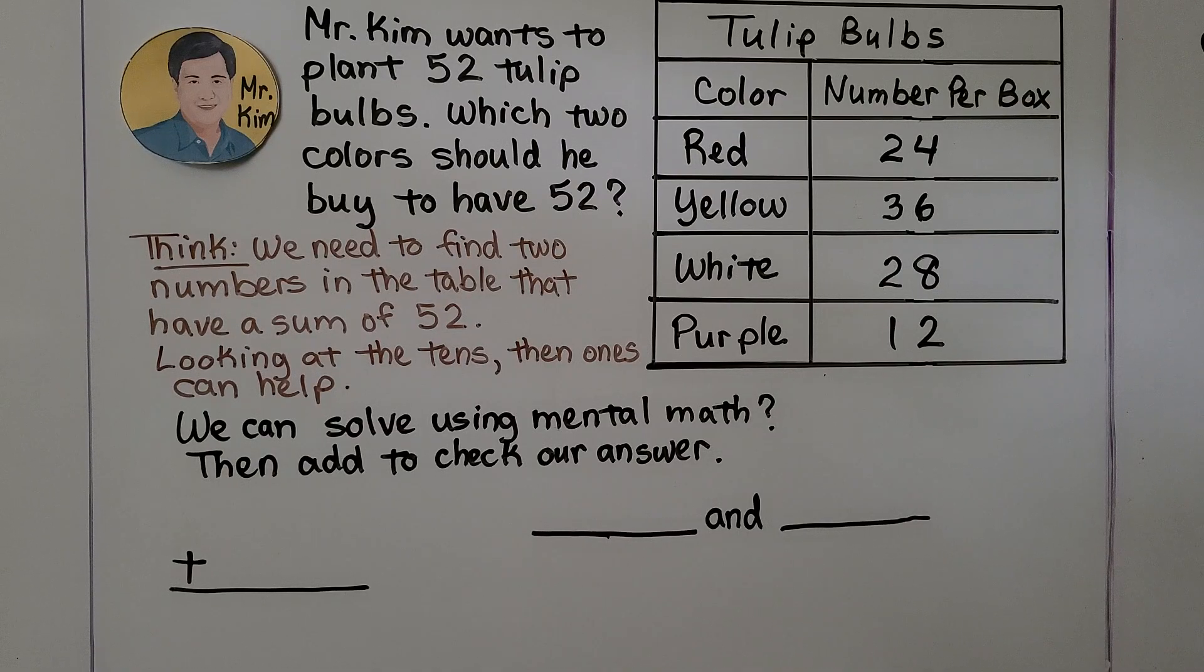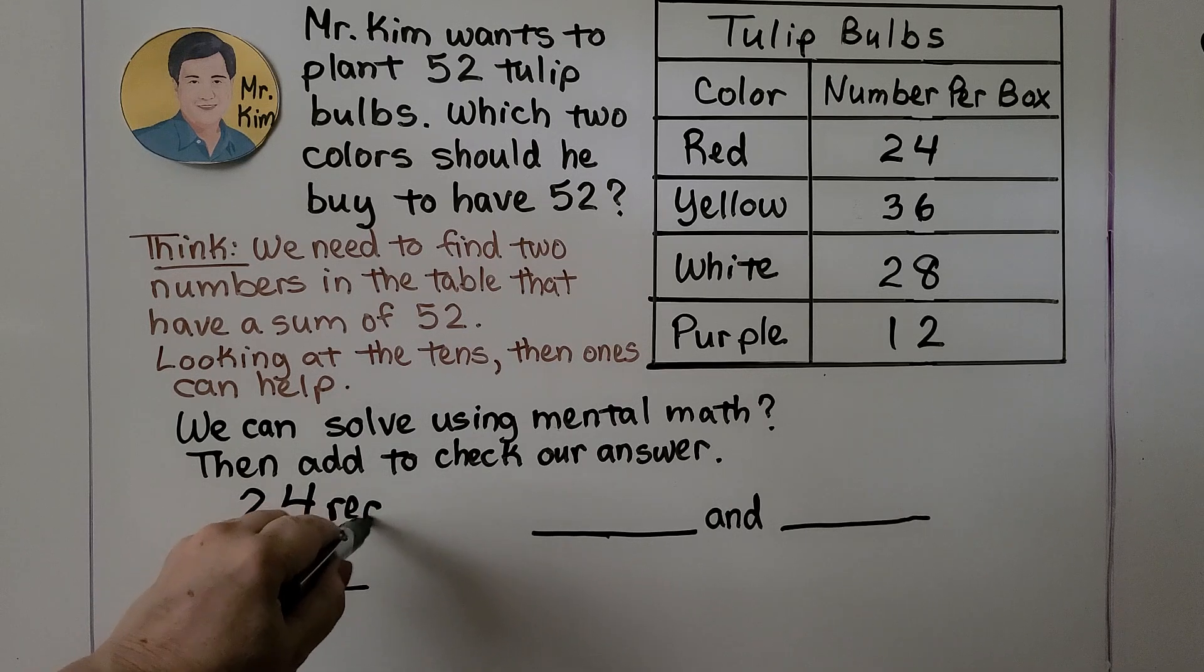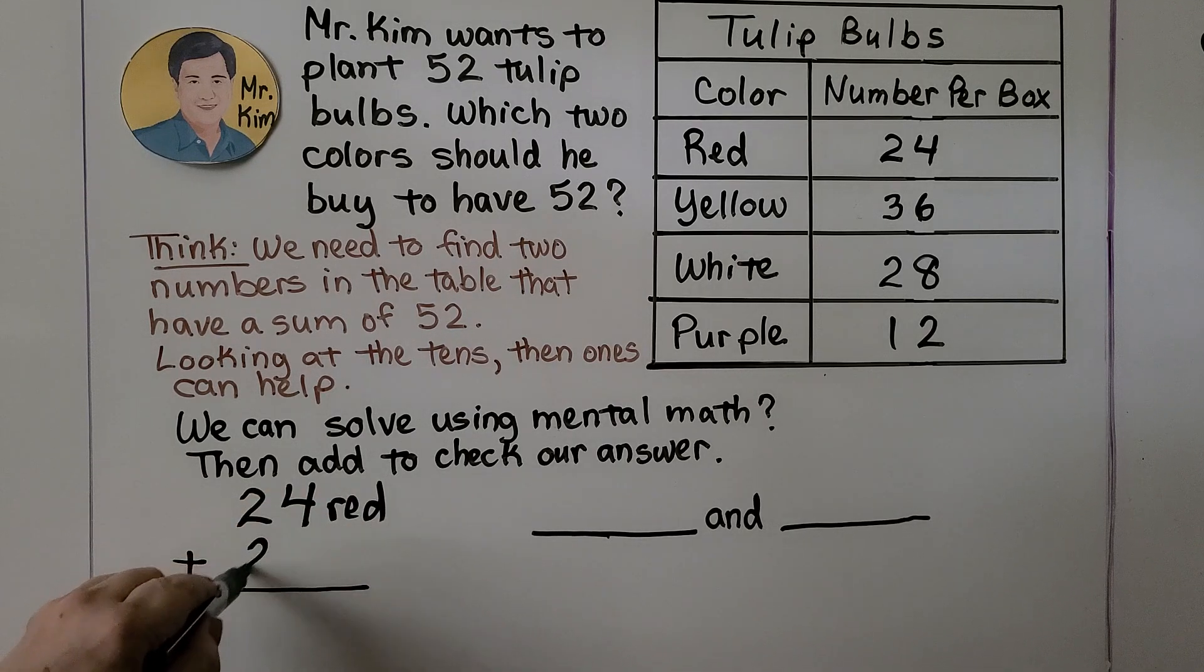We can add them to be sure. We've got 24, that's the red ones. And we can do 28 white.